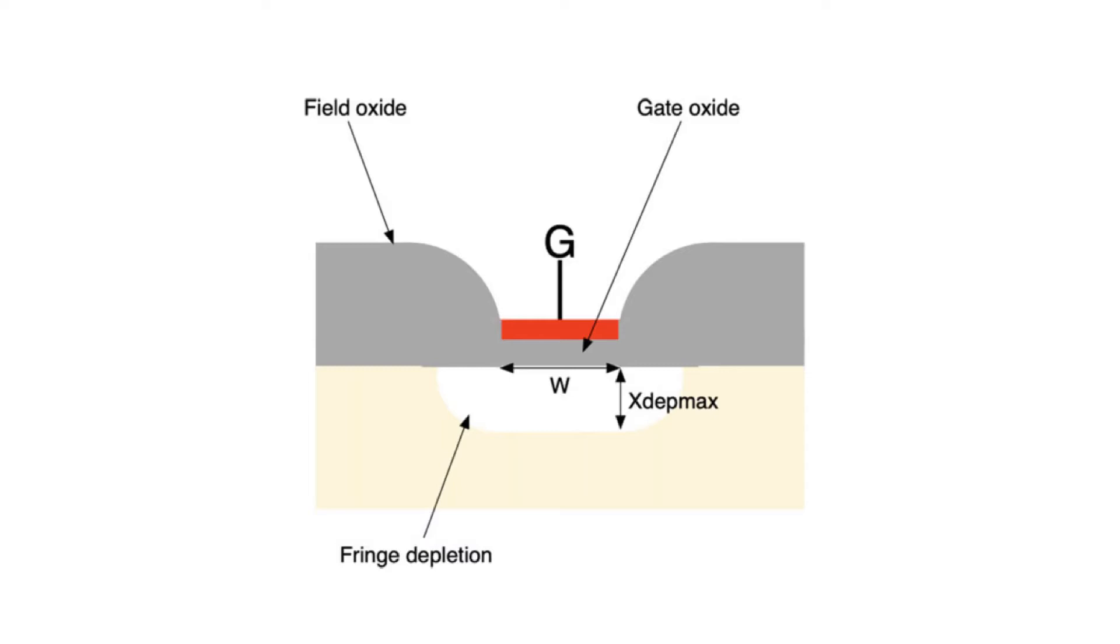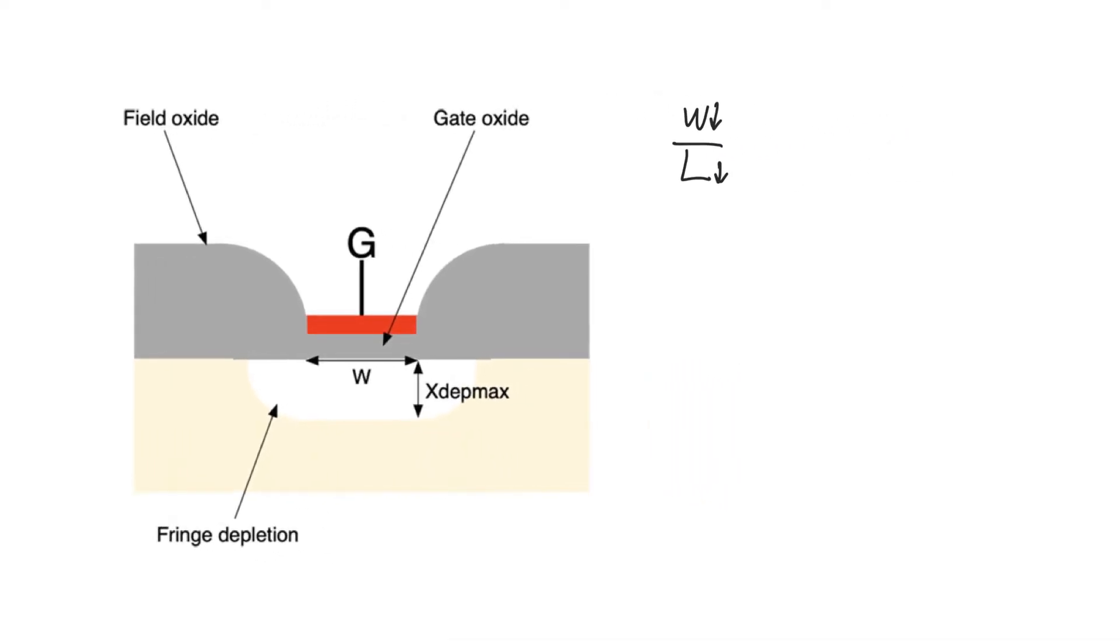We've so far always been talking about short channels, where L is small. But what about narrow channels where W is also small? First of all, is this a concern? Is the narrow channel transistor as much a concern as the short channel transistor?